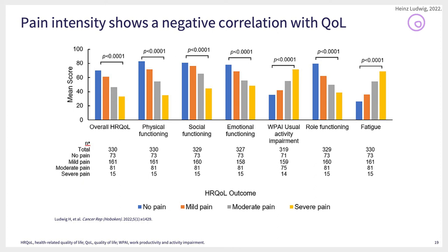Another study we did shows that pain alone has an impact and is associated with impairment of several quality of life items: overall health-related quality of life, physical functioning, social functioning, emotional functioning, work productivity, activity impairment, role function, and fatigue. So if the patient is in pain, you can assume that all these other items are suboptimal. Severe pain impacts on many dimensions of quality of life.